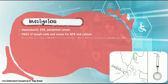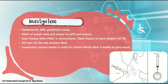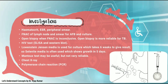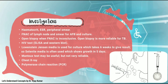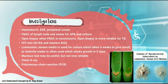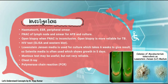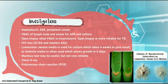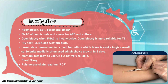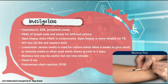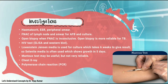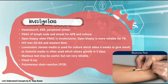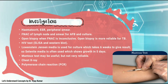Investigations include hematocrit, ESR, peripheral smear, FNAC of lymph node and smear for AFB and culture. FNAC is very useful but not as superior as open node biopsy. Open biopsy is indicated when FNAC is inconclusive, and is more reliable for tuberculosis and lymphoma, but is contraindicated in nodal secondaries. HIV test with ELISA and western blot. Lowenstein-Jensen media is used for culture, taking 6 weeks; selenite media shows growth in 5 days. Mantoux test may be useful but not very reliable. Chest X-ray to look for pulmonary tuberculosis. PCR is a very useful method.